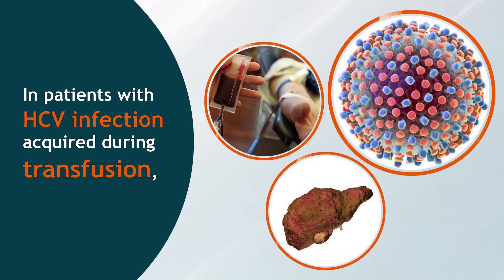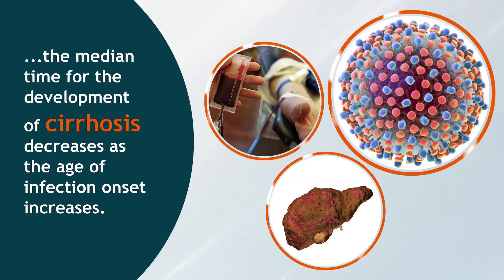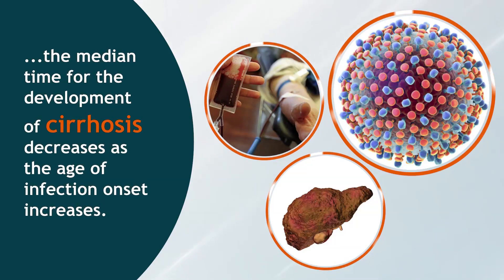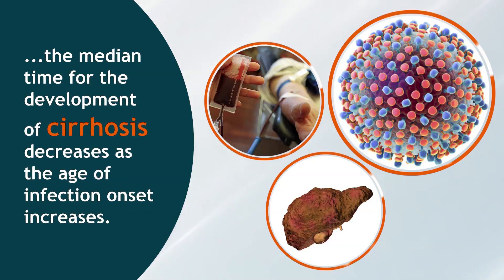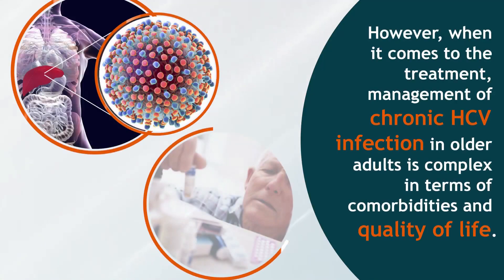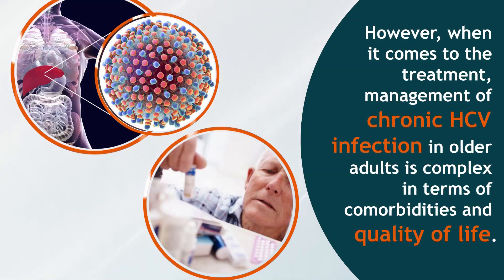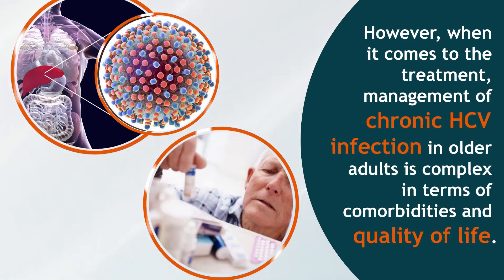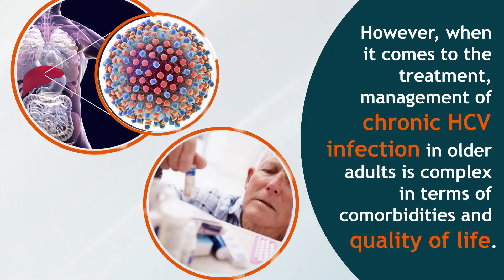This increased risk is due to the longer duration of infection in older people, and because older patients with mild hepatic disease are often asymptomatic and therefore not referred for evaluation. In patients with HCV infection acquired during transfusion, the median time for the development of cirrhosis decreases as the age of infection onset increases. When it comes to treatment, management of chronic HCV infection in older adults is complex in terms of co-morbidities and quality of life.